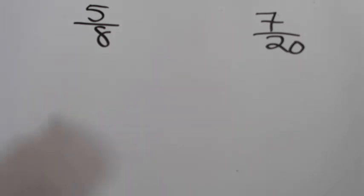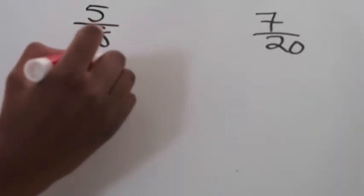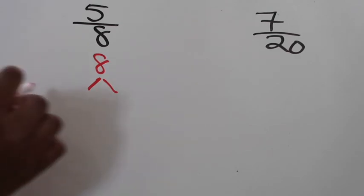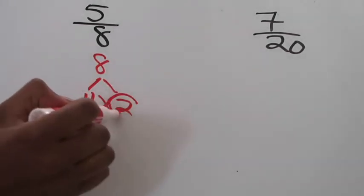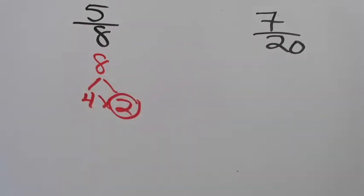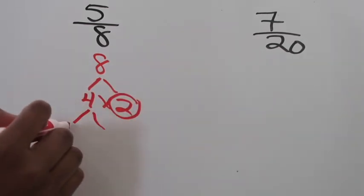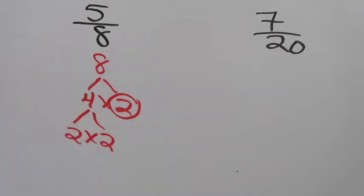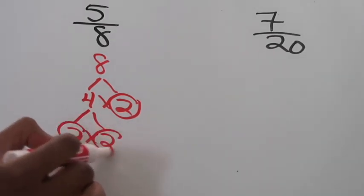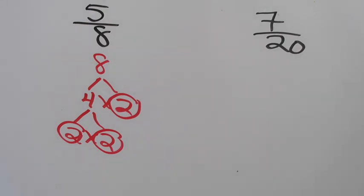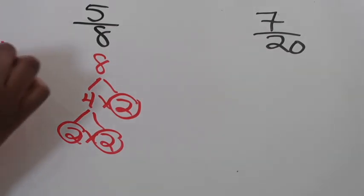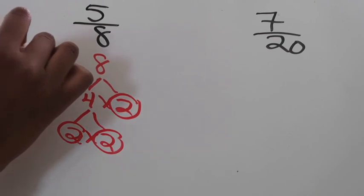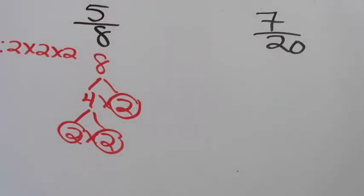We're going to take the number 8 and prime factor it. I know that two factors of 8 are 4 times 2. I know that 2 is a prime number, so I'm going to circle it. I'm going to continue to factor 4 using 2 times 2, and those are two prime numbers, so I'll circle those. I'm going to represent 8 as a product of its prime factors: 8 = 2 × 2 × 2.